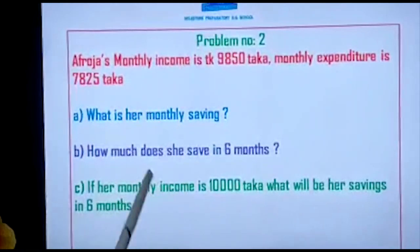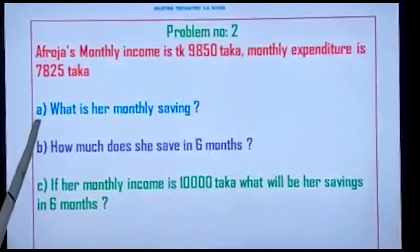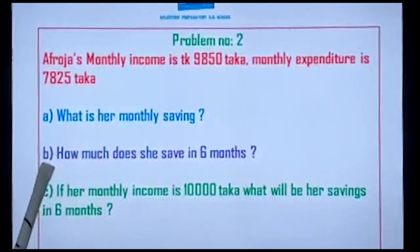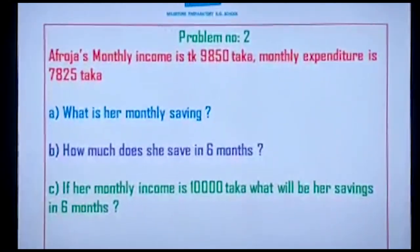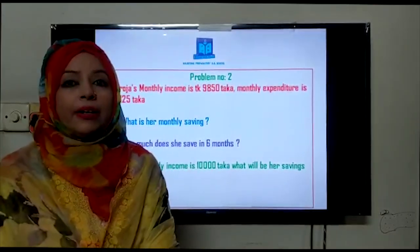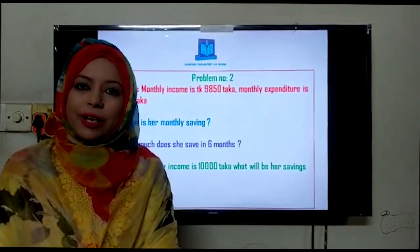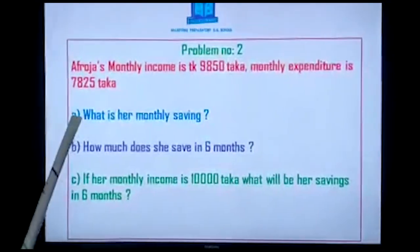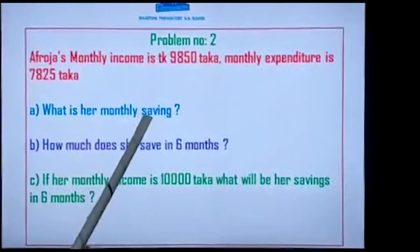Students, every part — like number A, number B, and number C — has an individual mark. In one structural question, the total marks is 8, but every part has individual marks. Now I will make you understand — the first question for us is: what is her monthly savings?